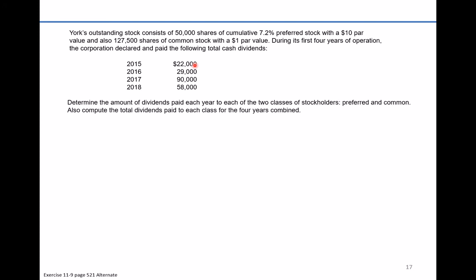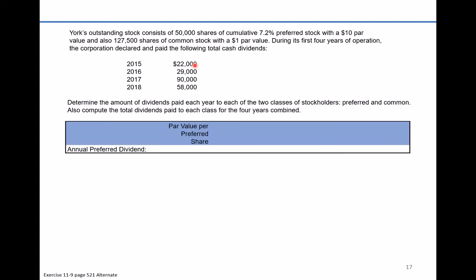The problem asks us to determine the amount of dividends paid each year to each of the two classes of stockholders — preferred and common — and to compute the total dividends paid to each class for the four years combined. On our chart: the par value per preferred share is $10, the annual dividend rate stamped on those preferred share certificates is 7.2%, the dividend per preferred share is $0.72, the number of preferred shares issued is 50,000, so the total annual preferred dividend is $36,000.